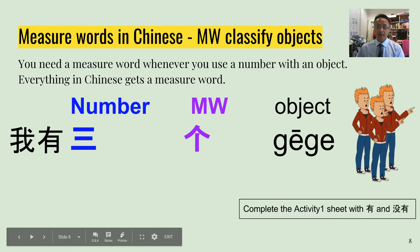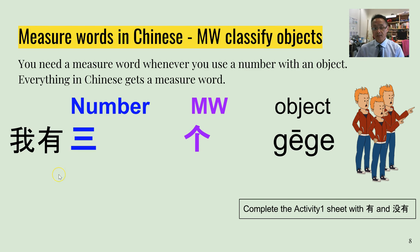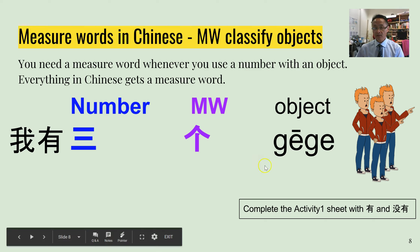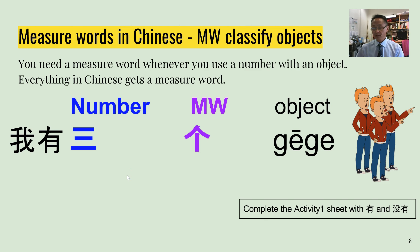When making a sentence, we can say: 'I have three older brothers.' 有 is the word from the previous video meaning 'to have.' So: 我有三个哥哥 — I have three older brothers.